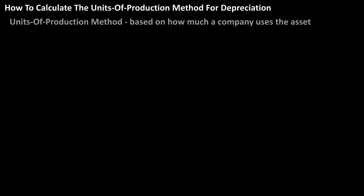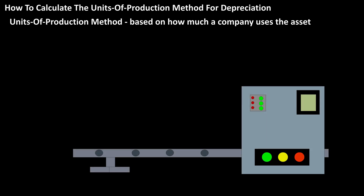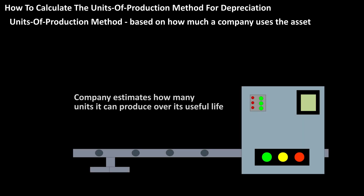The units of production method for depreciation is based on how much a company uses the asset. When a company buys an asset, they estimate how many units the equipment or asset can produce over its useful life.